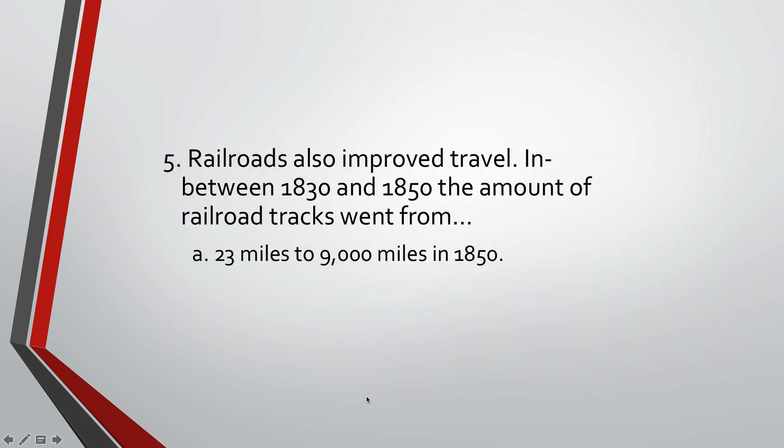Railroads also improved during this time. Between 1830 and 1850 — just 20 years — the amount of railroad tracks went from just 23 miles in 1830 to 9,000 miles of railroad tracks by 1850. These tracks zigzag all over the country, allowing for faster travel, faster communication, and a better sense of togetherness.